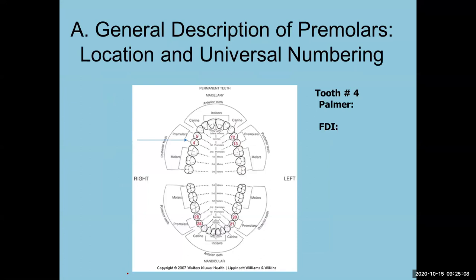Tooth numbers in the universal or continuous numbering system for premolars are: 4, 5, 12, 13, 20, 21, 28, 29. For example, tooth number four is in quadrant one. If the central is tooth one in the quadrant, counting along gives us: 1, 2, 3, 4, 5 — making it the fifth tooth, or 1.5 in Palmer notation. For the universal system, we start counting from the upper right third molar, versus other systems that start at the midline.